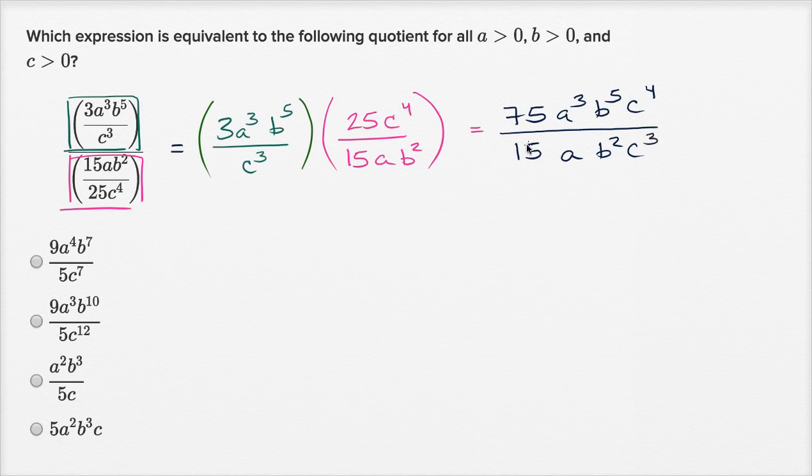Now we can try to simplify. What's 75 divided by 15? You're going to get five. And 15 divided by 15 is one. So the coefficient on this thing is just going to be five. So immediately, if I was under time pressure, I would just stop there and say, hey look, the only one of these choices that has a five out front is this choice right over here. So I'm feeling pretty good about it.